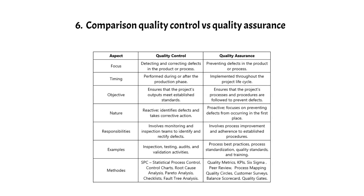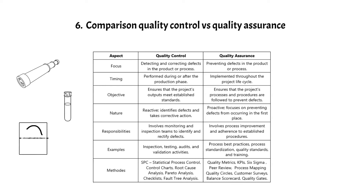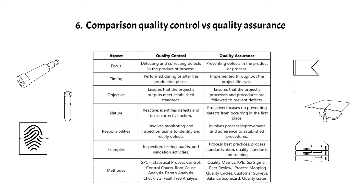Sixth, a comparison of quality control versus quality assurance. Quality control focuses on identifying and correcting defects in the final product or process — it is reactive and takes place during or after production, involving inspection, testing, and audits. Quality assurance, on the other hand, is proactive and concentrates on preventing defects by emphasizing process adherence and continuous improvement throughout the project's lifecycle, and includes process best practices, standardization, and training. Both are critical for ensuring overall quality in projects, but they have distinct roles and objectives. Check the attached table for exemplary methods you can use to set up quality control and quality assurance.